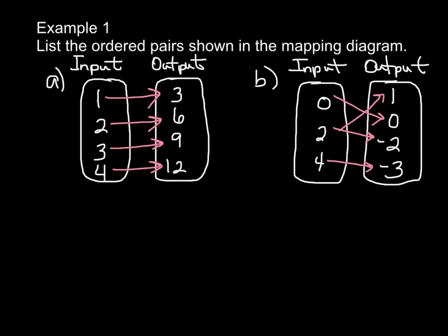So example 1: List the ordered pairs shown in the mapping diagram. In A, we have inputs of 1, 2, 3, and 4, and outputs of 3, 6, 9, and 12. If we listed them as ordered pairs, they would be (1,3), (2,6), (3,9), and (4,12).